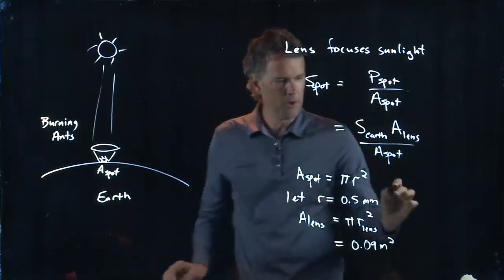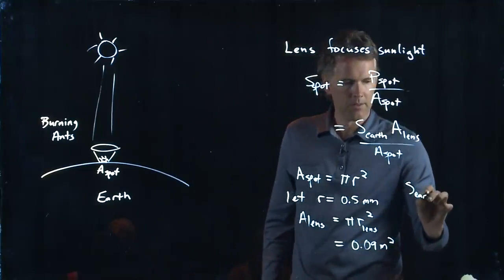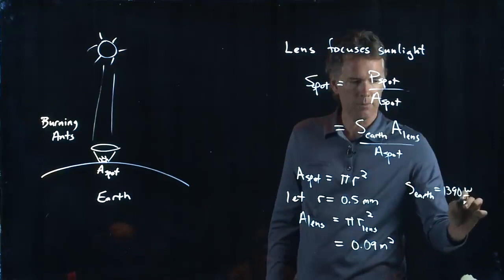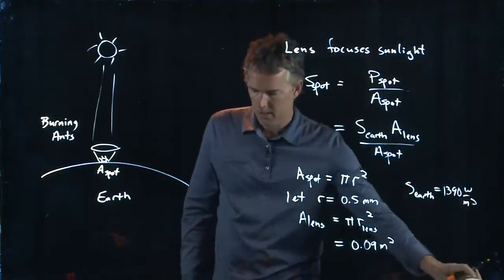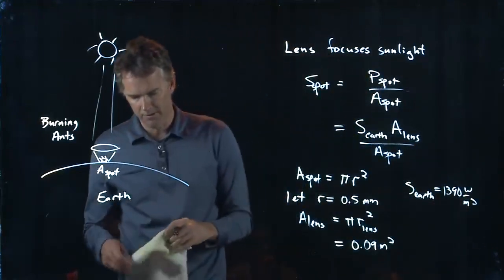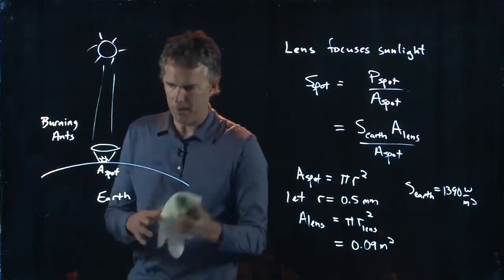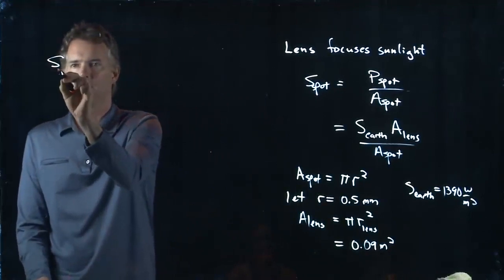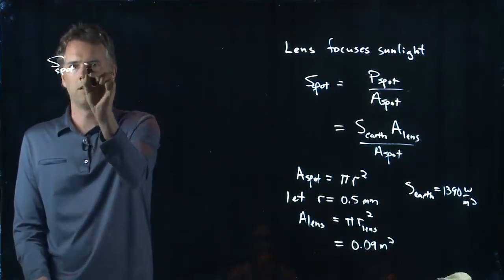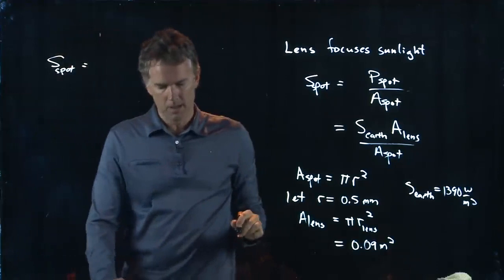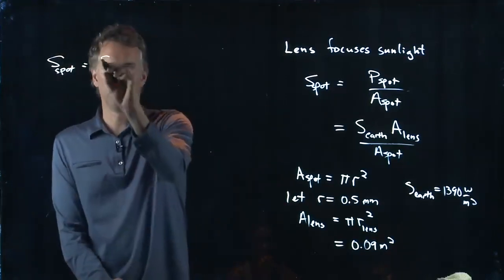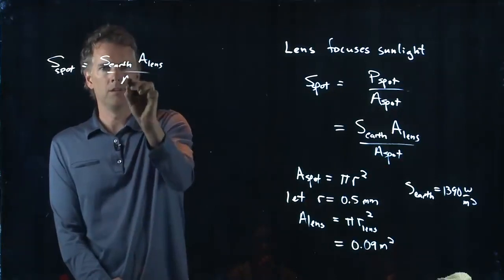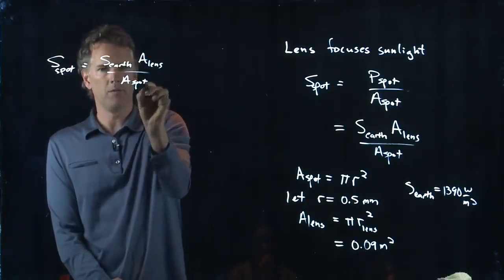We already know S at the earth, that was our 1390 watts per square meter. And so now we can put all this stuff together and calculate the intensity at that spot. The intensity at the spot is going to be S at the earth times the area of that lens divided by the area of the spot.